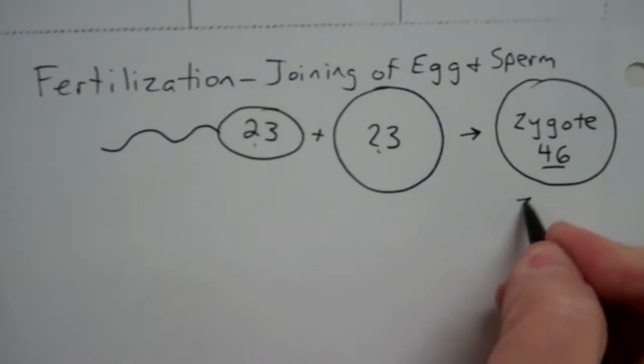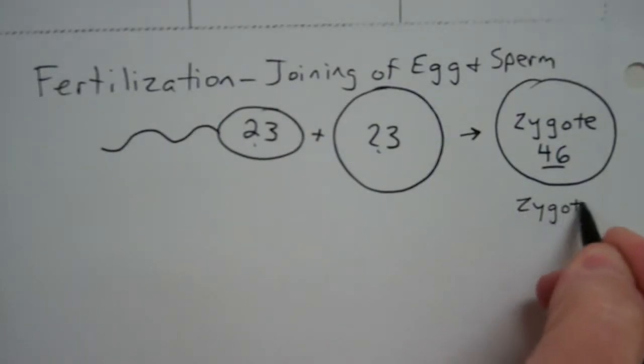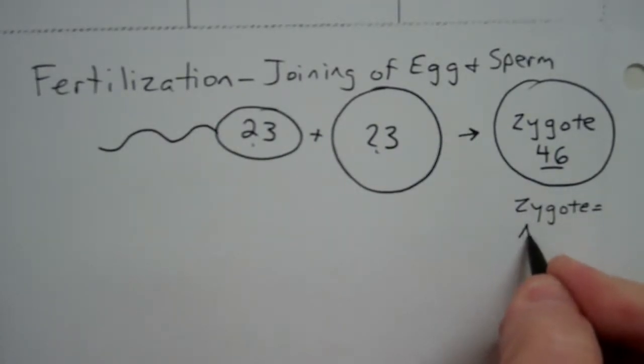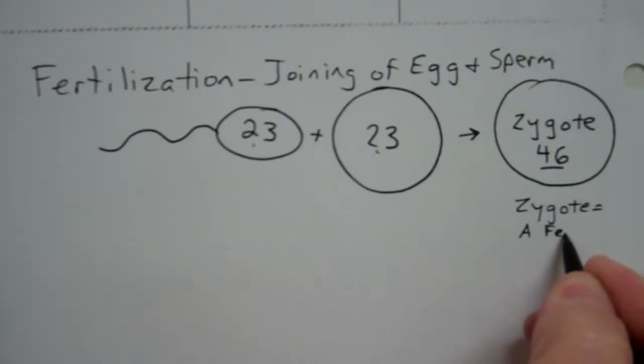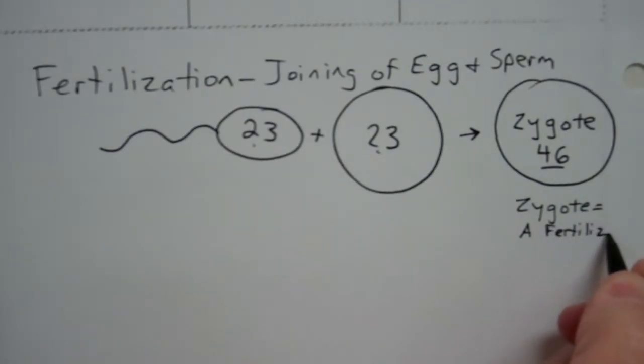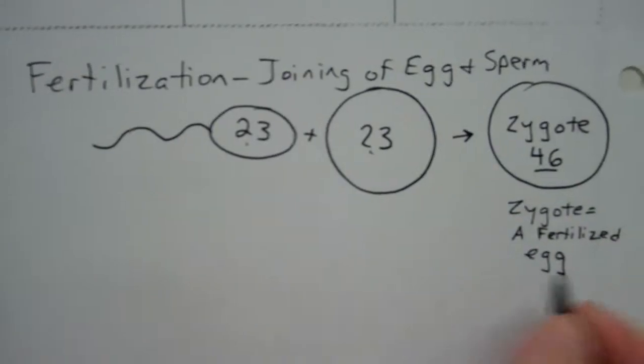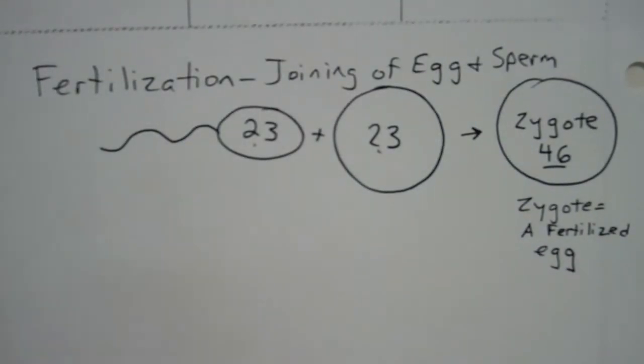A zygote, the definition of a zygote, is simply that it is a fertilized egg. I hope you can read all of this. So that's a fertilized egg. That's what a zygote is. Now, let's look at these chromosomes again.